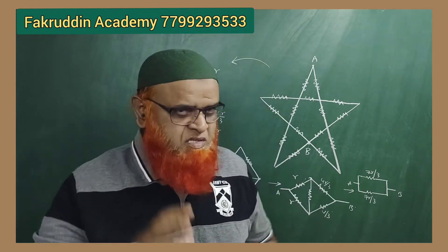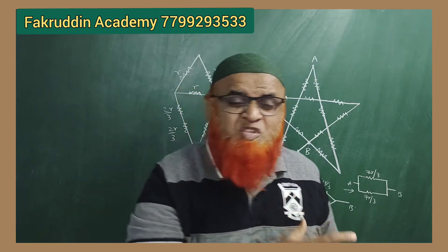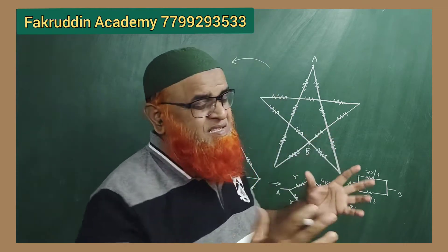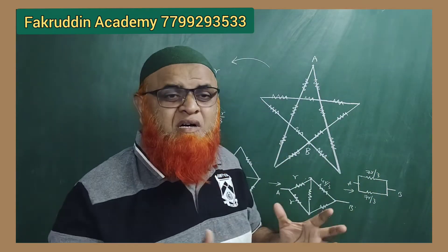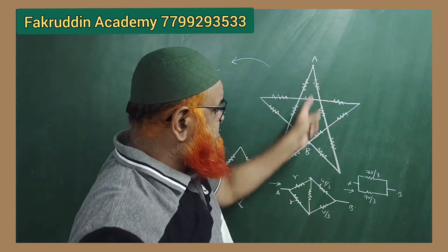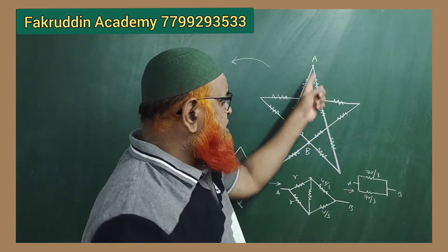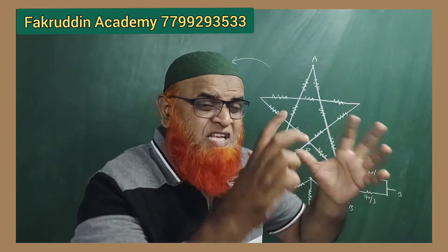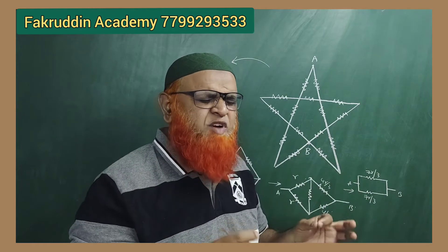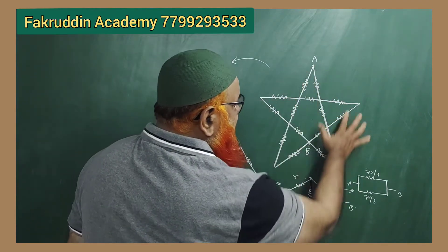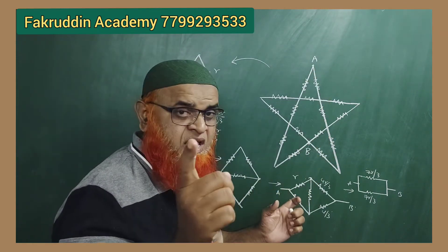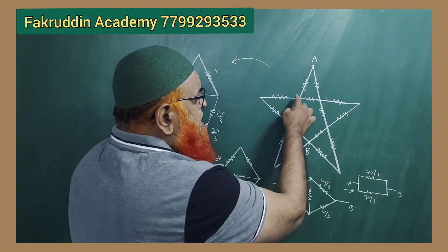Today I am going to discuss a very complex circuit, but let me solve it in a simple and easy manner. This is a simple structure of star-shaped resistors connected in this fashion, and you are asked to find out the resistance across A and B. I will prove that it is a complex Wheatstone bridge in a step-by-step process.